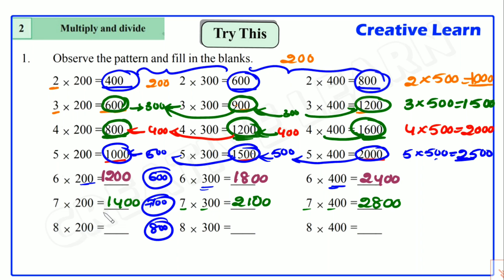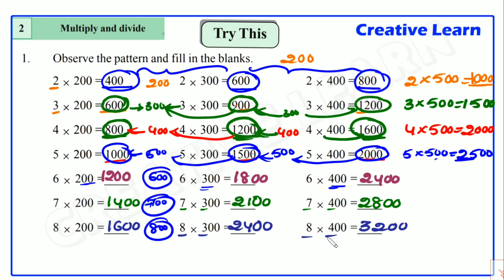Eight into two hundred: eight twos are sixteen, two zeros common — sixteen hundred. Eight into three hundred: sixteen hundred plus eight hundred is two thousand four hundred. Check: eight threes are twenty-four, two zeros common. Eight into four hundred: two thousand four hundred plus eight hundred is three thousand two hundred. Check: eight fours are thirty-two, two zeros common. Just follow this pattern.